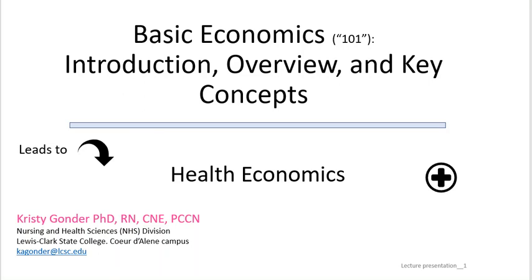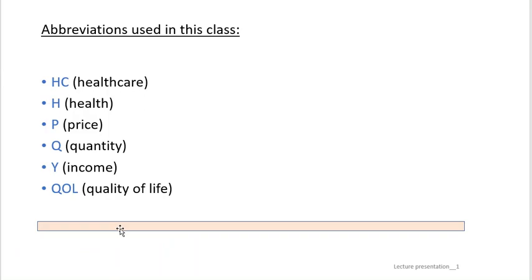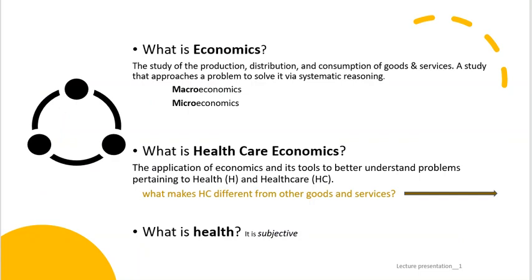Let's get right into it. We will begin with common abbreviations used. Moving on, let's define: what is economics? It is the study of the production, distribution, and consumption of goods and services. Additionally, it is the study of how resources are allocated — scarce resources. There is never an endless supply of anything. Like subspecialties, there too are major bodies of study in economics.